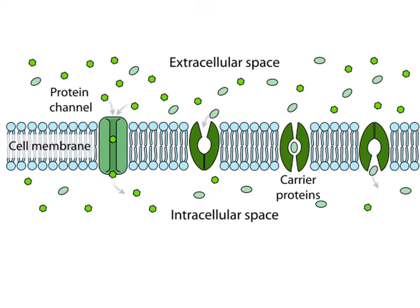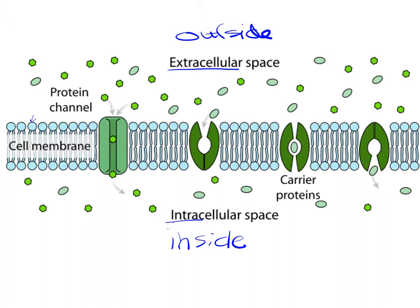Looking at this diagram, the extracellular space is on the outside and the intracellular space is on the inside. This is our cell membrane with its hydrophilic head and hydrophobic tail. The polar molecules want to come through, but since they are polar, they have to go through either the protein channel — if there's enough space — or, if they're too big to fit, they take a carrier protein. The carrier protein opens, allows the molecule in, kind of locks it, and then spits it out.